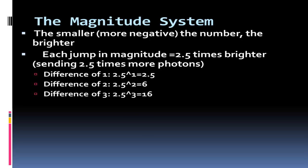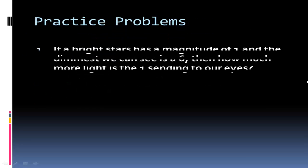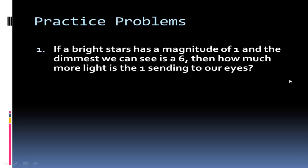Here's a problem example: if the brightest star has a magnitude of one and the dimmest is a six according to the ancient Greeks, then how much more light is a one sending to our eyes? We need to know the difference in magnitude - from a six to one is five. So 2.5 to the fifth is 98 times the number of photons, which means a one is actually 98 times brighter.